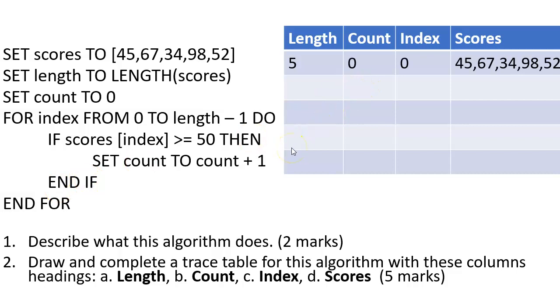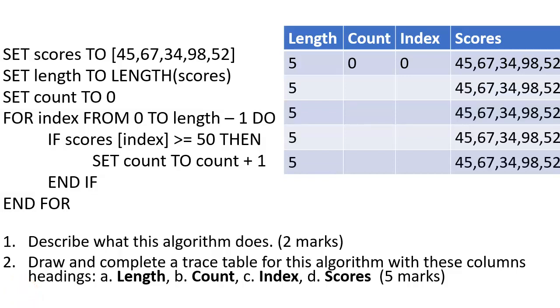And for index from zero to length minus one do. So indexing is going to start at zero because array indexing always starts at zero. Now I've written all of these values - I don't need to do that, but they're not going to change throughout the whole algorithm, so I've just added them all the way down. To save yourself time in the exam, you don't necessarily need to do that. You can just leave those columns blank after the first value, but I put them in there just to show you what's going on.